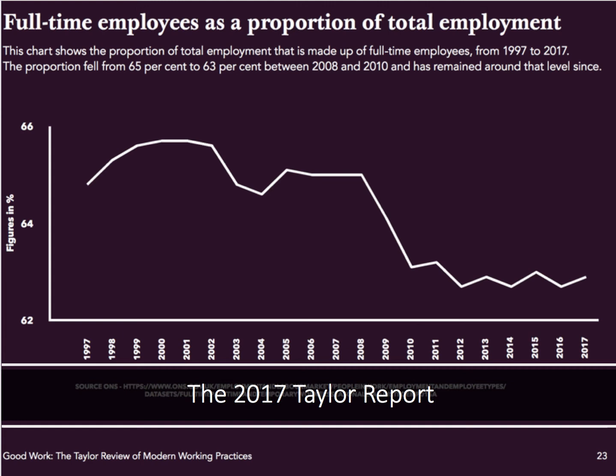One of their charts showed the fall in the percentage of people in work who have a full-time job — taken from the Taylor Report. Note the skewed nature of the Y-axis. There has been a reduction in the percentage of people with a full-time job, from just under two-thirds in 2008 down to about 63%. The rise of self-employment and part-time work is partly behind that trend.